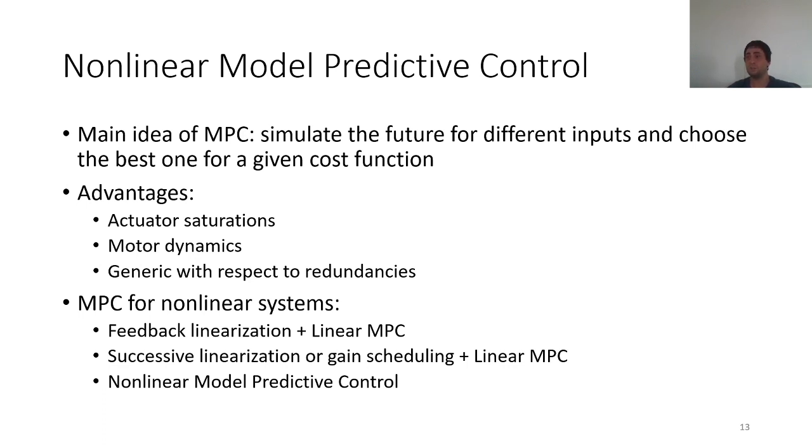It has some advantages for us. First of all, it takes into account the actuator saturations. Also, it takes into account motor dynamics. As I said, using TinsyShot, we are doing a speed control loop on the motors. And this speed control loop has its own dynamics. This control loop dynamics were not taken into account in the computed torque controller, but it can be taken into account easily with a model predictive control framework. Also, the model predictive controller is much more generic with respect to redundancies. With the computed torque controller, if we want to take into account the redundancies added by a robotic carrier, we would need to solve a control allocation problem. But it's quite native in the model predictive control. We only need to adapt the cost function of the controller.